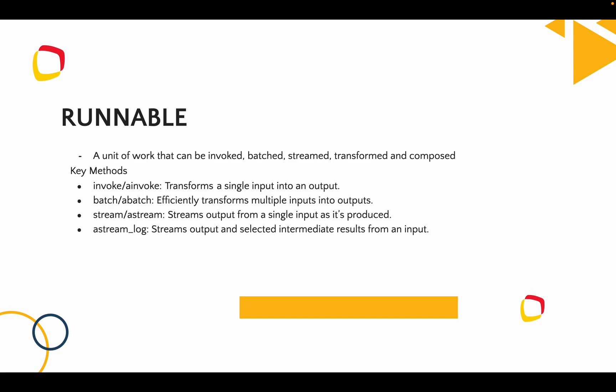Once a method or class is inherited from Runnable, it will have the following methods: an invoke method or asynchronous invoke method, a batch or asynchronous batch method, a stream or asynchronous stream method, and a stream log method as well. Now we can see how to create a runnable component and how to chain these components together.